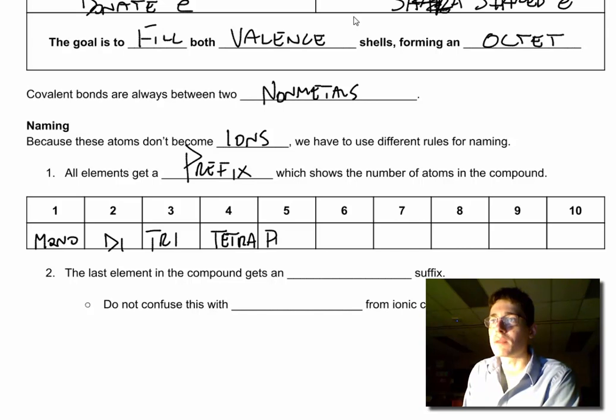Six is hexa. Seven, hepta. H-E-P-T-A. Eight is octa. Nine is nona. And ten is deca.